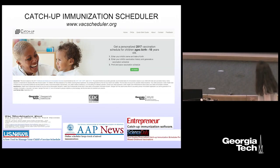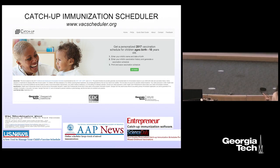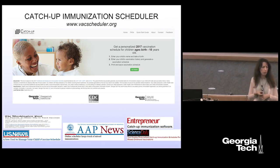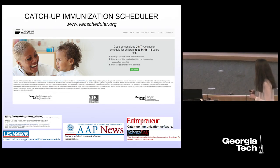The tool is available at https://vaxscheduler.org. If you have friends and family members with young children, recommend it to them. It works for children from 0 to 18 years old. Feedback and suggestions would be most welcome. It's been up on the website and we update it every year in collaboration with the CDC, as the vaccination schedule sometimes changes from year to year. The overall structure remains the same.